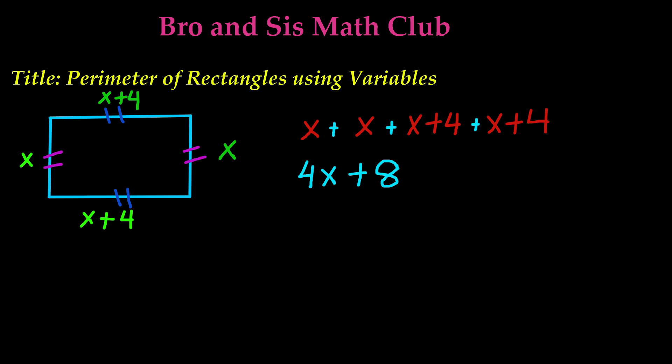So let's say that the value of x is 9. If you plug in the value as 9, we'll have to do 4 times 9 plus 8. So 4 times 9 is 36 plus 8, which gives us 44. So that means the perimeter of this rectangle is 44. Let's say if this was in centimeters, it would be 44 centimeters.